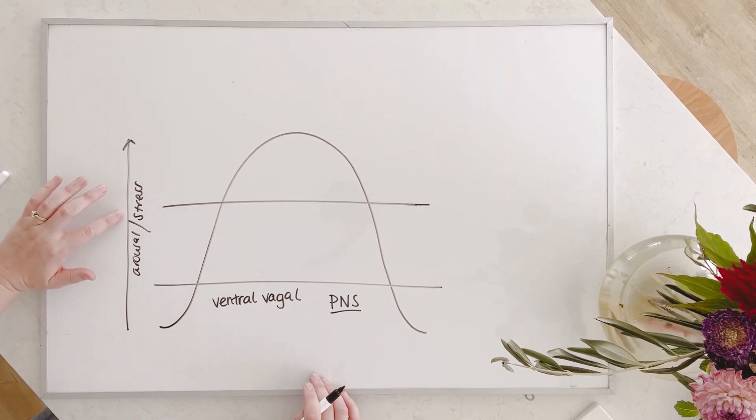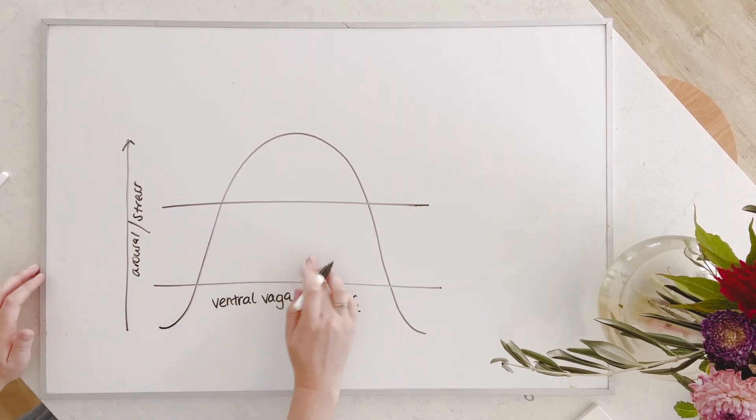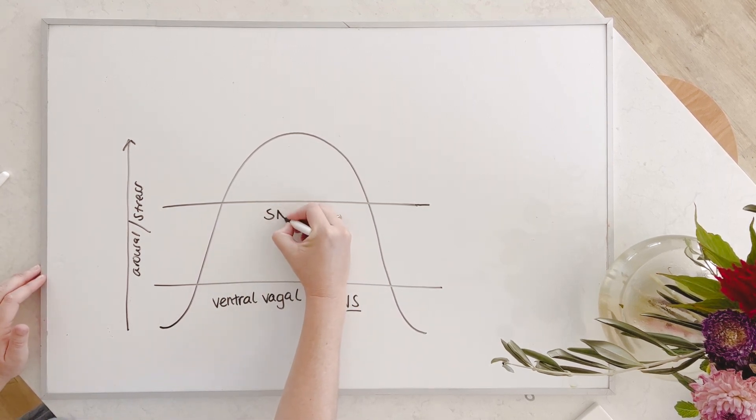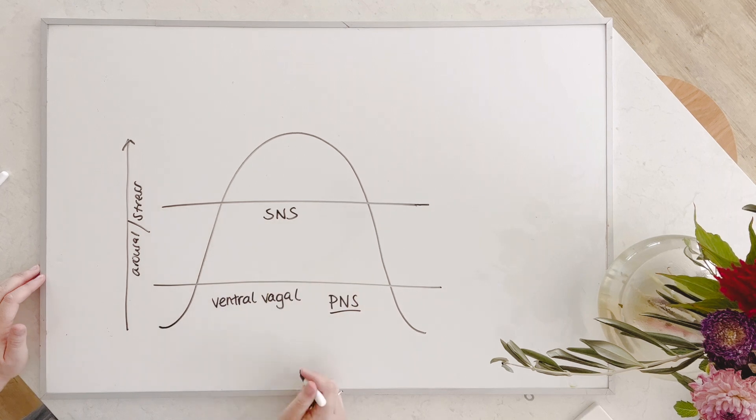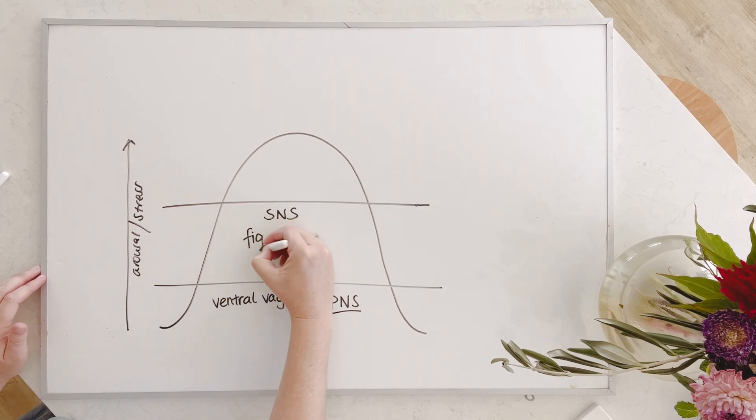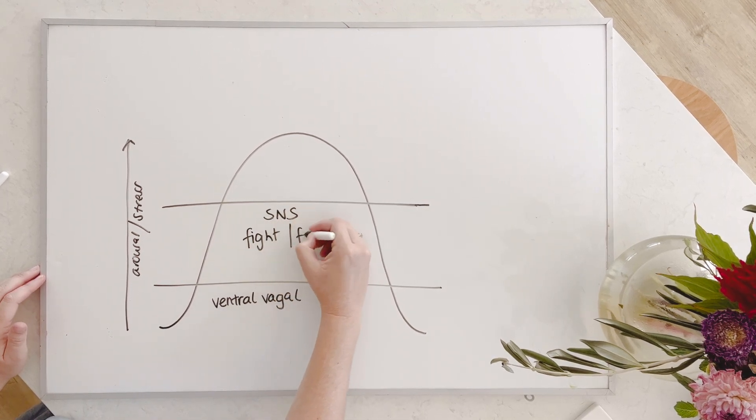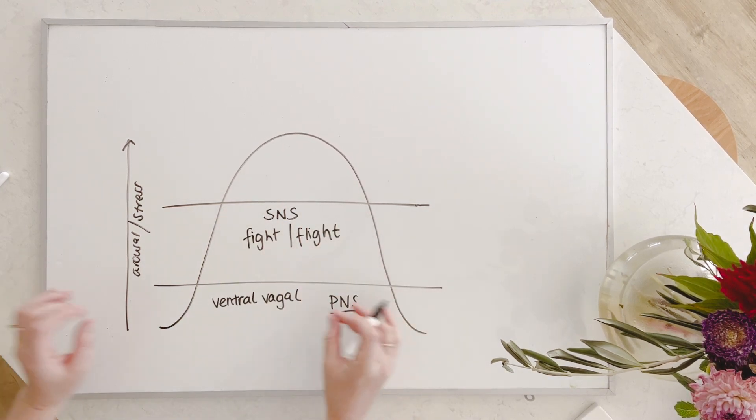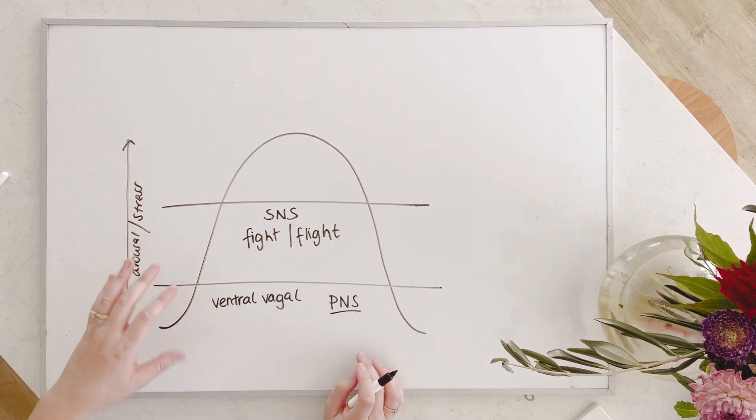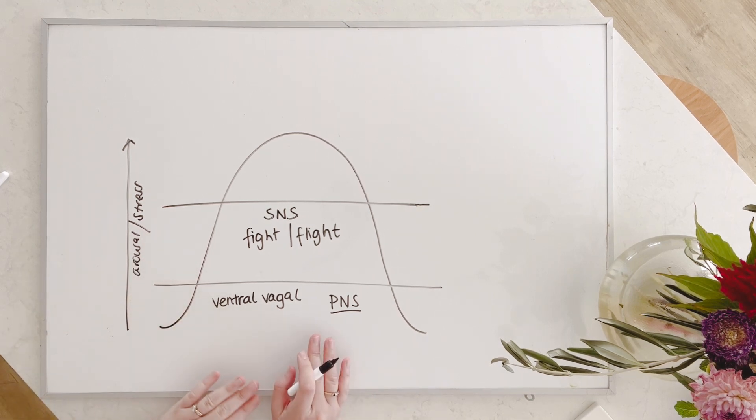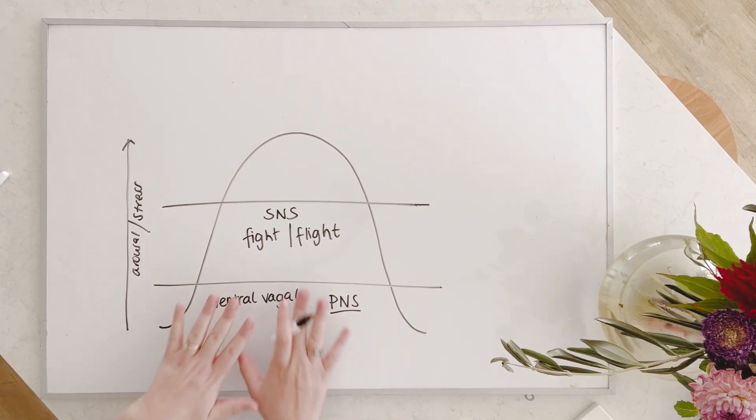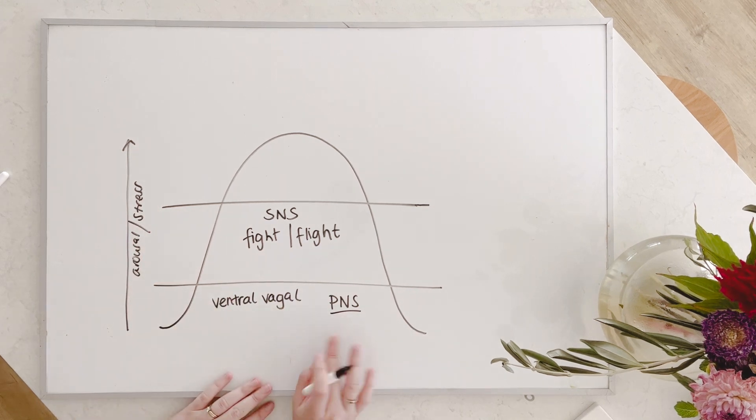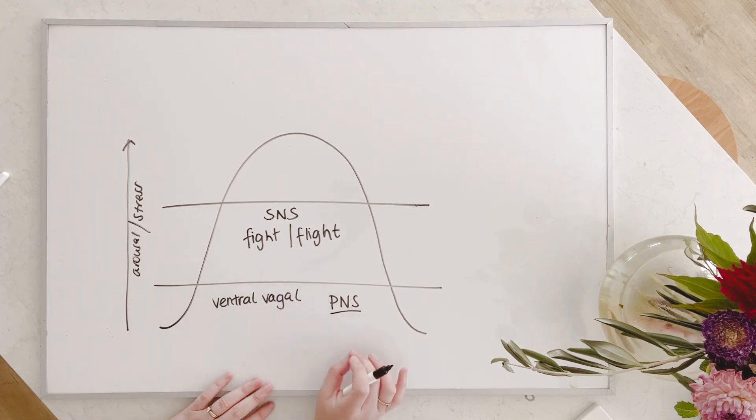So as that level of stress increases, we come into the next section, which is our sympathetic nervous system. And you might recognize this as fight flight. So this is where we have detected some level of threat, whether that's a real threat, or whether that's perceived doesn't matter to the nervous system. This stuff is taking place at a subconscious and automatic level.